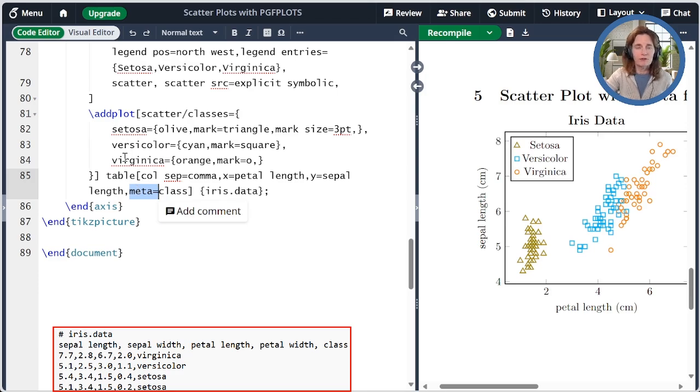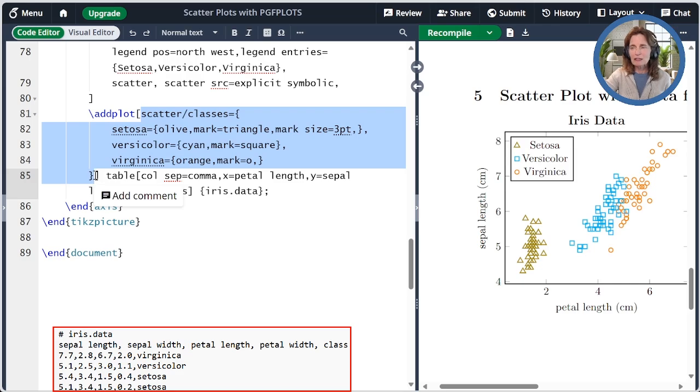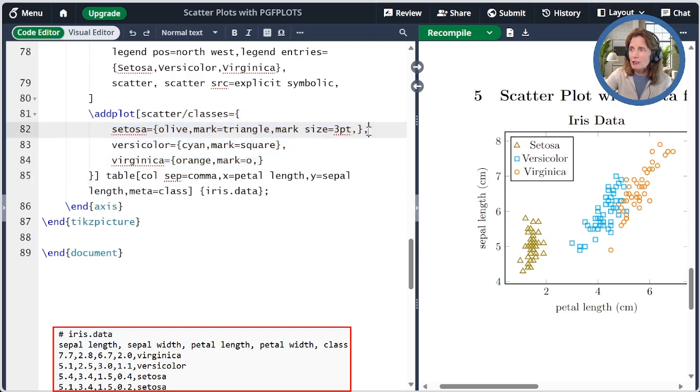In that column are the symbolic types, setosa, versicolor, and virginica. And then inside the addplot command, I specify scatter slash classes equals, and then how each class should be plotted. So I say setosa is olive triangles. The versicolor is cyan squares, and the virginica is orange circles. These are separated by commas, but there should not be a comma following the last class definition.